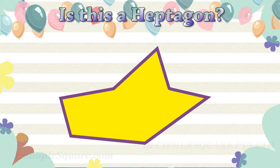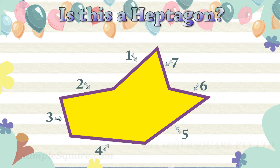Is this a heptagon shape? Yes, this is a heptagon shape. It has seven straight sides and seven corners.